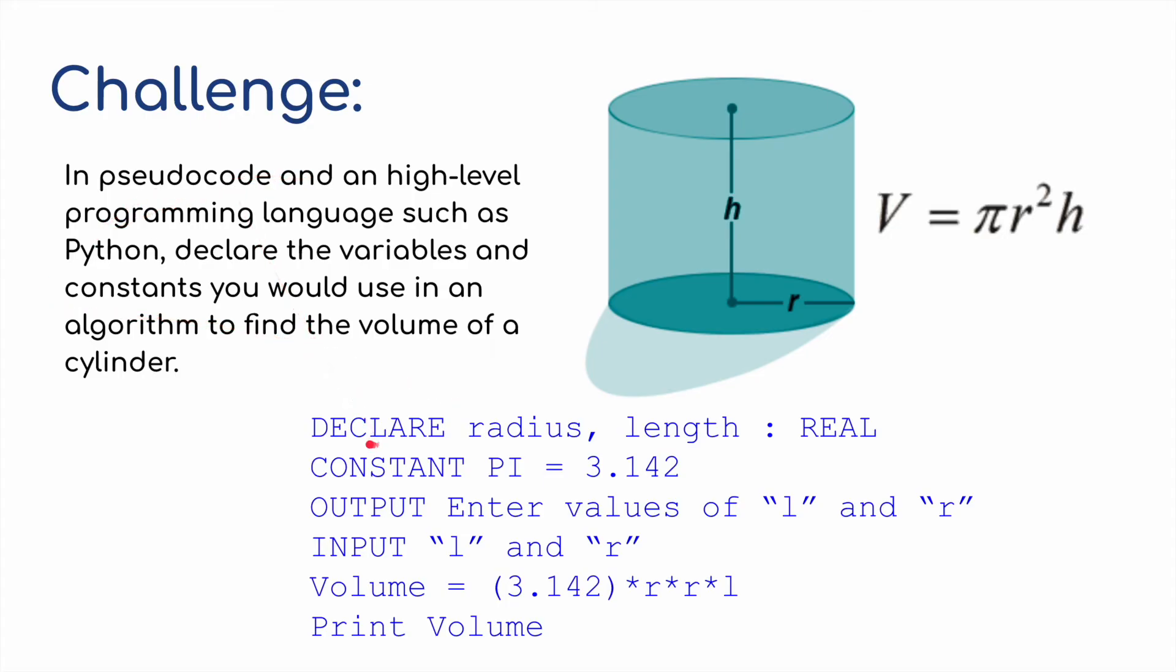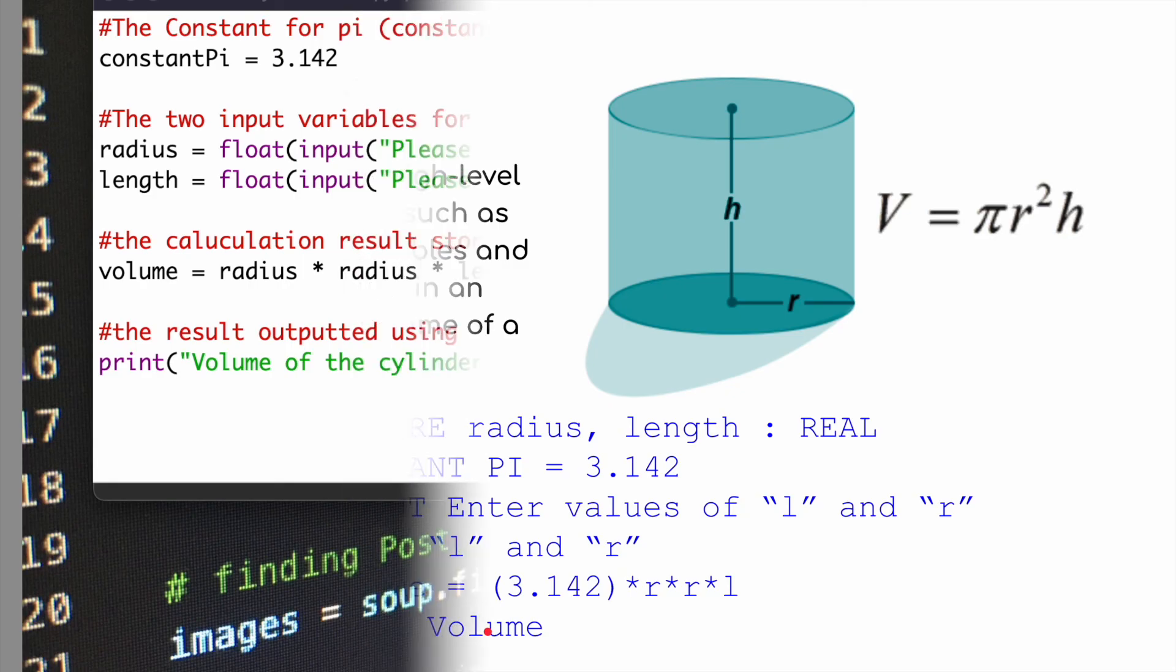For the pseudocode, I've declared the radius and the length to be real numbers. That's what these two variables are going to be, they're going to be real numbers. My constant for pi is going to have a value, a fixed value of 3.142. We're going to output, enter values of length and radius. The user will input the length and the radius. Variable volume is going to store a calculation, i.e. the constant multiplied by two times radius, times by the length. And then finally we're going to print, or we're going to output, I could have used output, I'm going to use print there, output the volume.